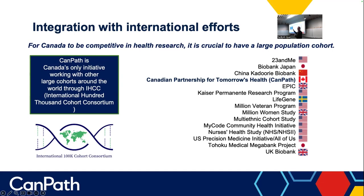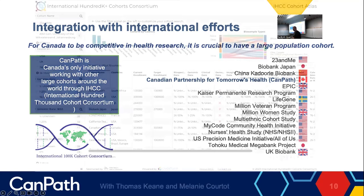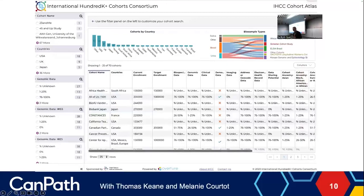There is something called the International 100,000 Cohort Consortium — I'm on the steering committee. To be a member you need at least 100,000 participants and genotyping either done or planned. The Million Veterans Study and the All of Us program both have a million people in the United States. In CANPATH, we currently have about 50,000 participants genotyped — the largest cohort to date. We're hoping that within a couple of years we'll have all of CANPATH exome sequenced and whole genome sequenced.